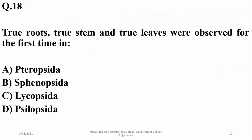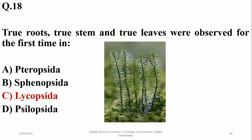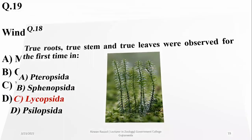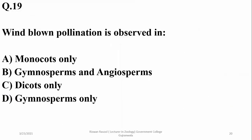True root, true stem, and true leaves were observed in Lycoposida or Lycopods — they are the first plants to have all these structures in the true sense with xylem. Wind-blown pollination is observed in gymnosperms as well as in angiosperms.